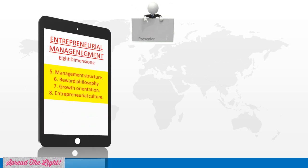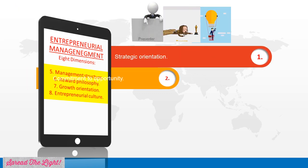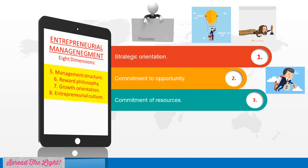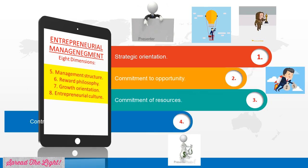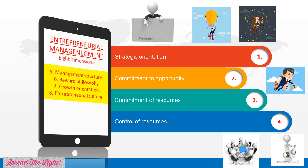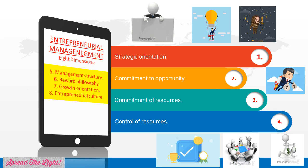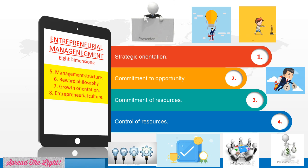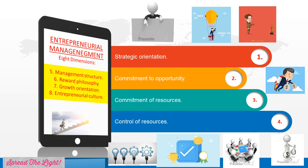Entrepreneurial Management is distinct from traditional management in terms of 8 dimensions: (1) Strategic Orientation, (2) Commitment to Opportunity, (3) Commitment of Resources, (4) Control of Resources, (5) Management Structure, (6) Reward Philosophy, (7) Growth Orientation, and (8) Entrepreneurial Culture.